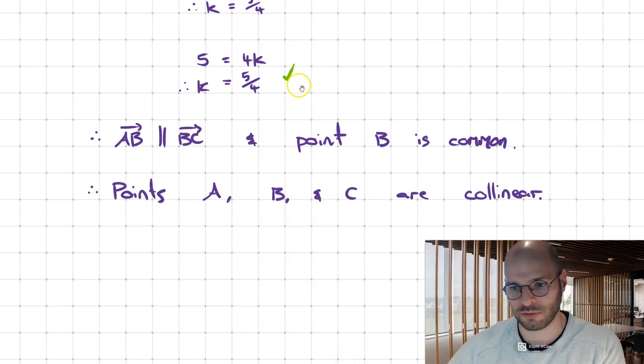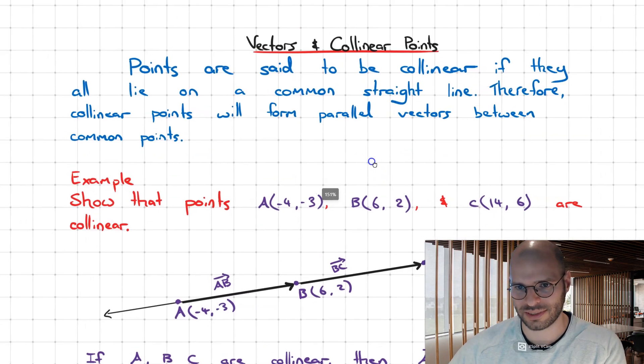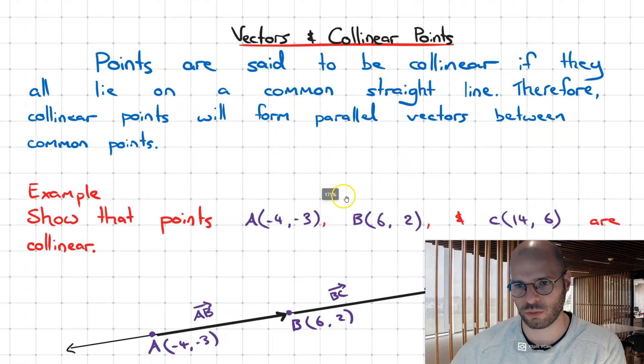So let's have a look at this from the top. We set out to learn how to show whether points are collinear or not using vectors. We discovered that points are collinear if they all lie on a straight line. Therefore, if all the points lie on a straight line, they're going to form position vectors that are parallel to one another, where they share common points.